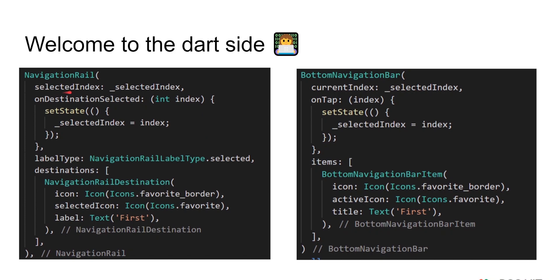They basically take in the same parameters. The selected index for Navigation Rail is the same as the current index for bottom navigation bar, to tell it which index we are currently on. It has an on-destination-selected function which takes in an integer, which is basically the same as on-tap for bottom navigation bar. It has a destinations parameter which takes in a list of navigation rail destinations, similar to how we pass bottom navigation bar items to the items parameter.